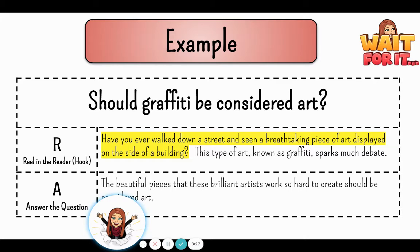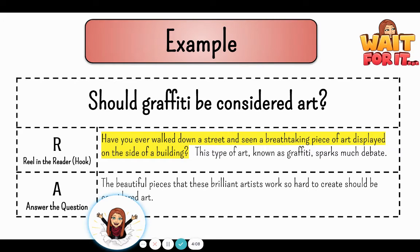Let's look at an example together. The question is: should graffiti be considered art? Graffiti is the spray painting and the different words and pictures that sometimes you see on the sides of buildings. Some people think it's artwork; other people think it's destruction of property and it shouldn't be allowed. For my hook — the yellow highlighted sentence — you can see: 'Have you ever walked down a street and seen a breathtaking piece of art displayed on the side of a building?' I used the question technique to hook the reader. 'This type of art known as graffiti sparks much debate.' That's my hook — I haven't given my answer yet, just hooked you into thinking about what the rest of my paragraph will be about.